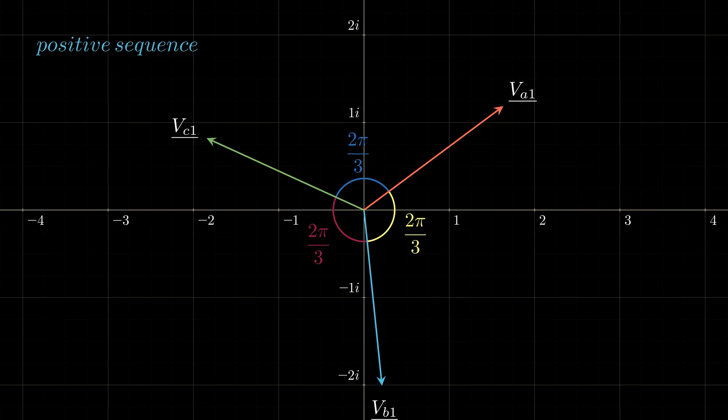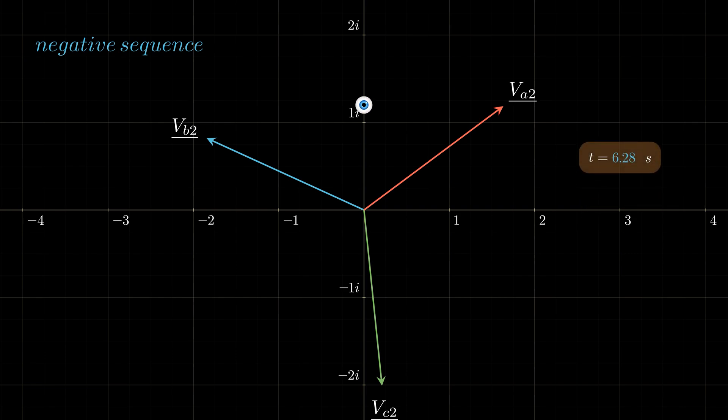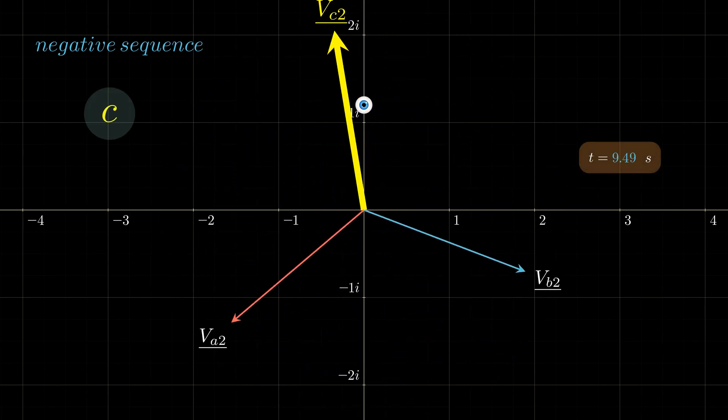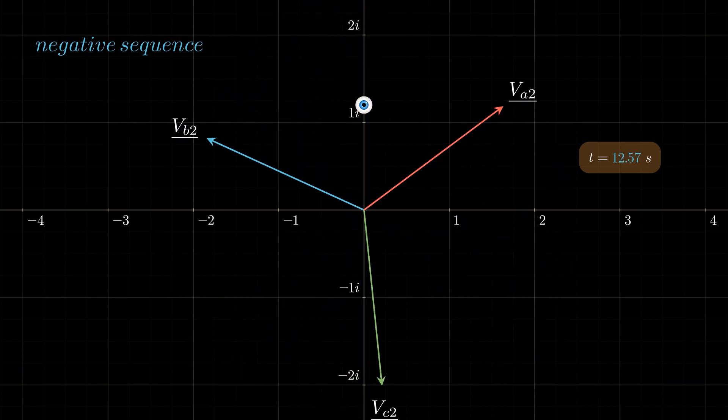The final characteristic is the balanced nature of these phasors. At any instant, if we place the vectors head to tail, they form a closed triangle returning to zero, so the sum of the three phases is always null. The second balanced system is called the negative sequence. The only difference compared to the positive sequence is that phases B and C are swapped. It is indicated using the subscript 2 instead of 1. This time when the phasors rotate, the observer on the grid would encounter A, then C, then B—hence the name negative sequence.